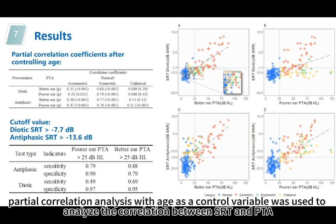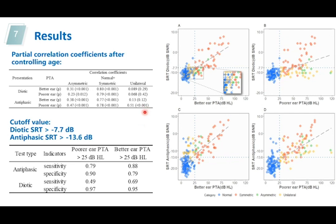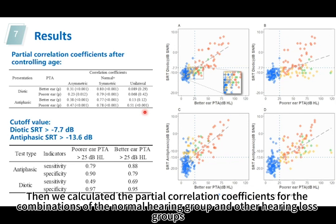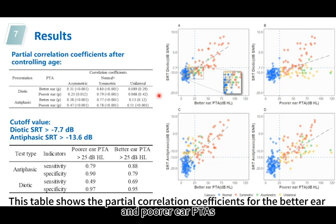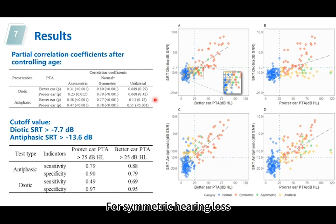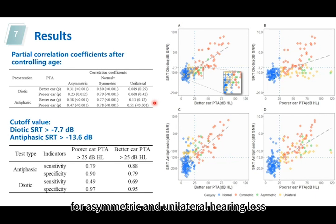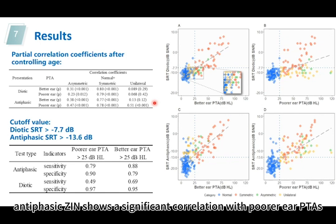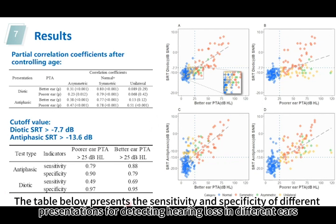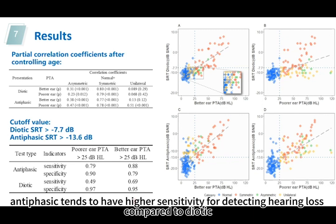Considering the influence of age, partial correlation analysis with age as a control variable was used to analyze the correlation between SRT and PTA. We calculated the partial correlation coefficients for the combinations of normal hearing group and other hearing loss groups. This table shows the partial correlation coefficients for the better ear and poor ear PTAs. For symmetric hearing loss, the antithelastic scene test did not exhibit a stronger correlation with PTAs compared to the diverted scene test. However, for asymmetric and unilateral hearing loss, antithelastic scene shows a significant correlation with poor ear PTAs. The table below presents the sensitivity and specificity of different presentations for detecting hearing loss in different ears. Overall, antithelastic scene tends to have higher sensitivity for detecting hearing loss compared to diverted.